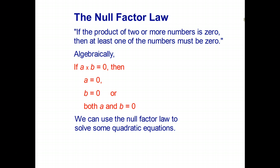In words, if the product of two or more numbers is zero, then at least one of the numbers must be zero. Algebraically, if a times b is zero, then either a is zero, b is zero, or they're both equal to zero. And it turns out this is exceptionally useful for solving quadratic equations.